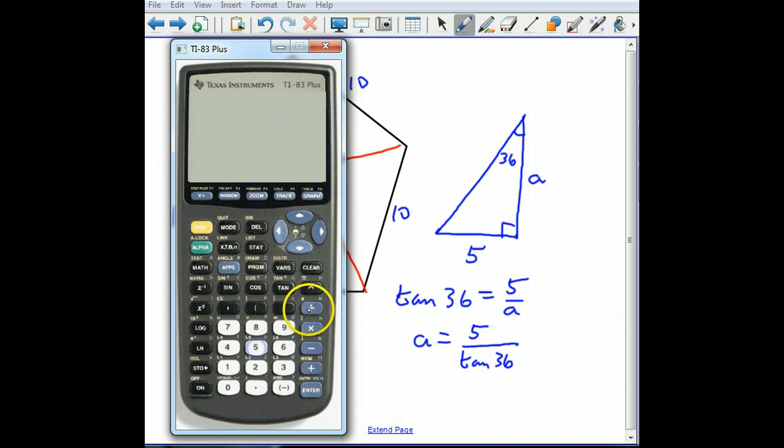Okay, so what is that going to be? Well, 5, oops, turn it on. 5 divided by tangent of 36, and I'm in degree mode, I get 6.9.